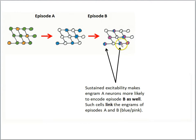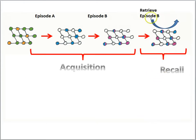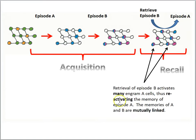Notice we color the cells both blue and pink. The blue cells were the engram A cells, but they retain excitability, so some of these cells will fire in response to episode B. Episode B has unique aspects to it, so we'll also get some other cells — the pink cells — responding as well. But notice there's overlap: some of the very same cells are part of the engram of both episode B and episode A. This means that if we retrieve the memory for episode B, we will be reactivating many of the very same cells that were the engram of episode A, so we'll get retrieval of episode A as well. The retrieval of episode B activates many engram A cells, thus reactivating the memory of episode A. The memories of A and B are mutually linked.